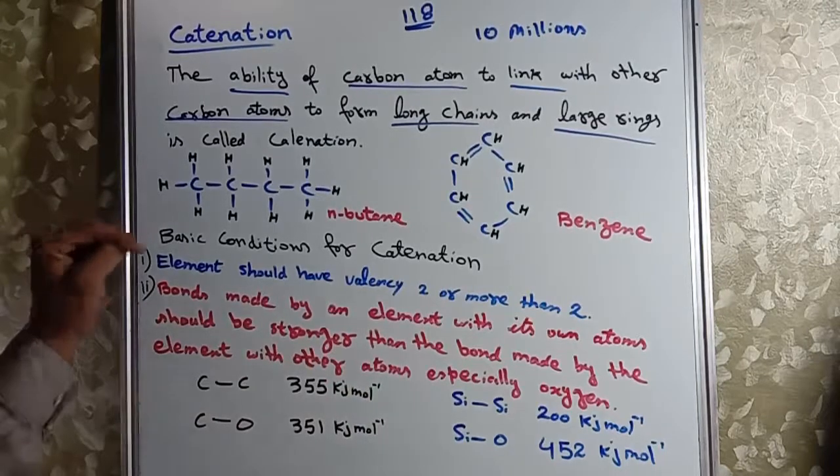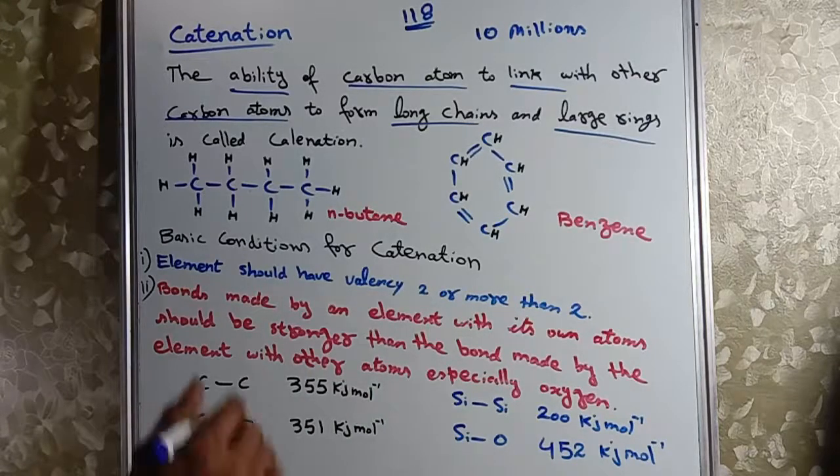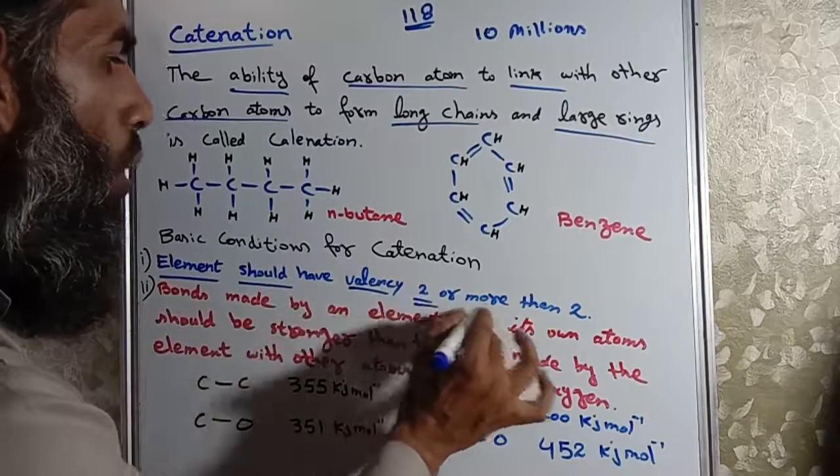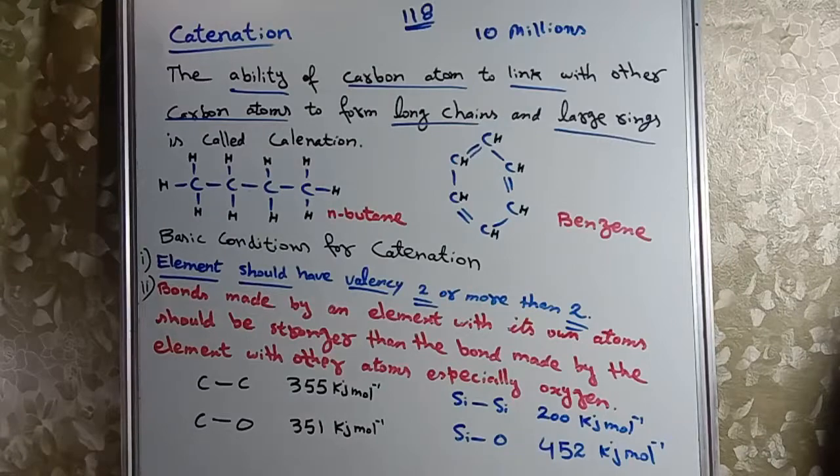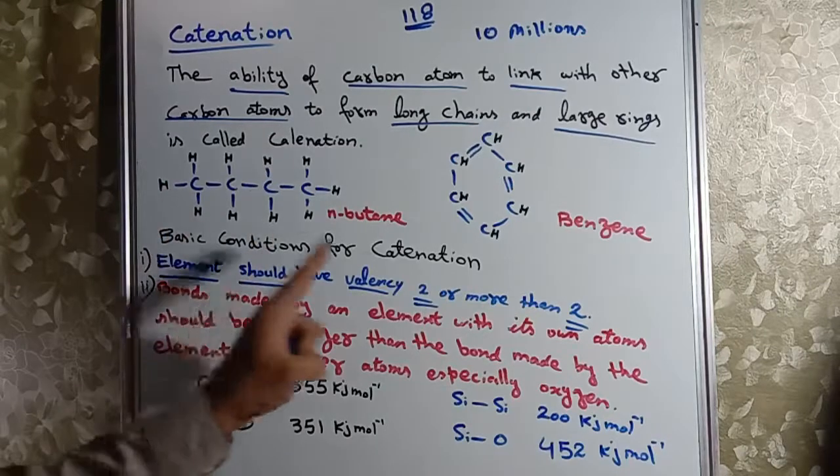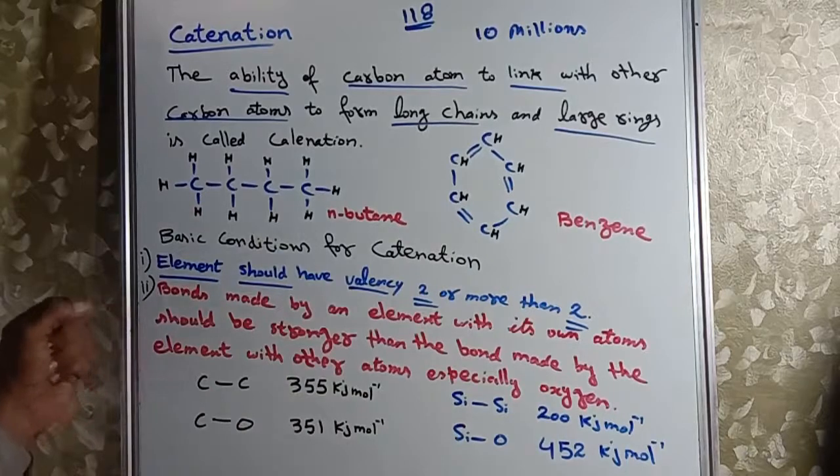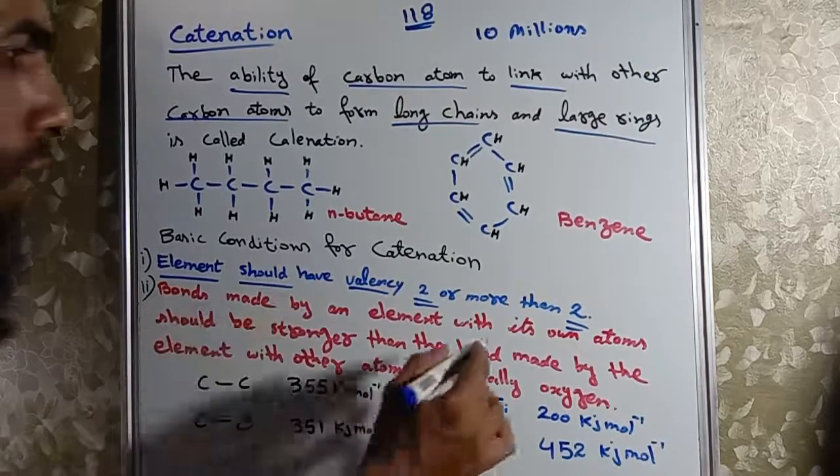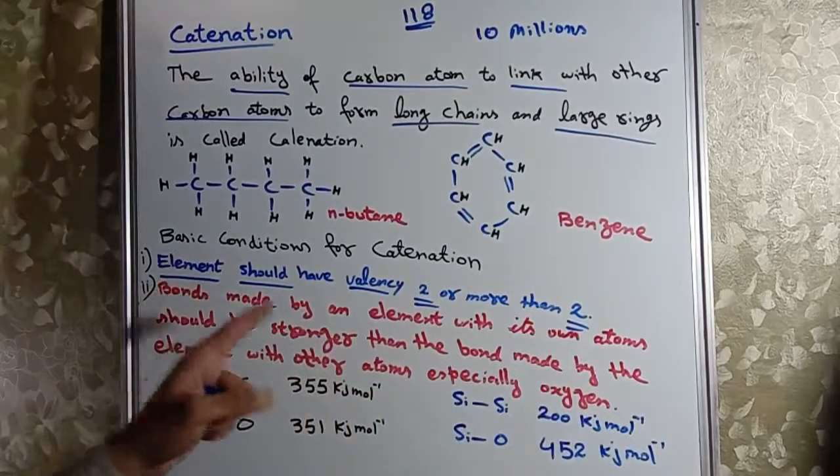Catenation ke liye basic do conditions hoti hain jo elements catenation show karte hain. Pehli condition hai: elements should have valency two or more than two. Jis element ne catenation ki ability show karni hai uski valency two ya two se zyada honi chahiye. Aur second point bahut important hai.